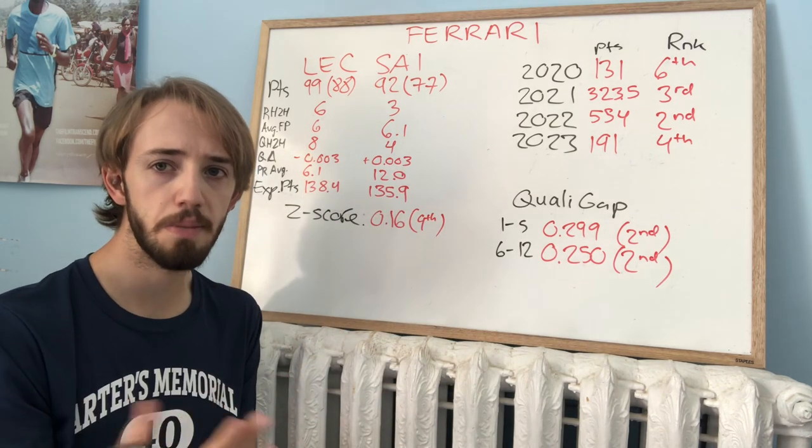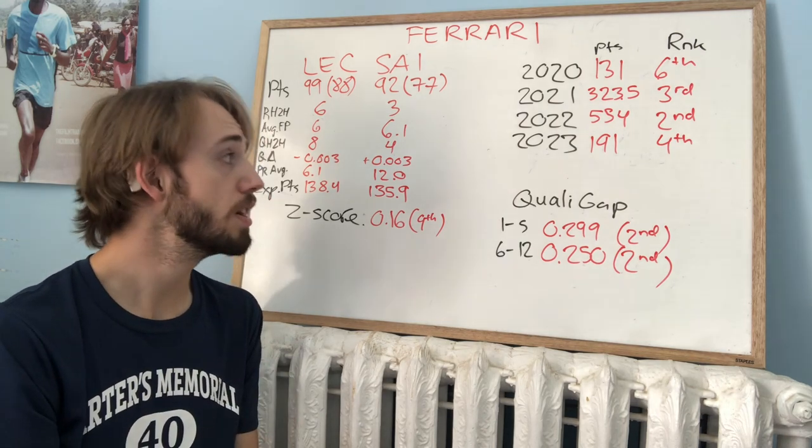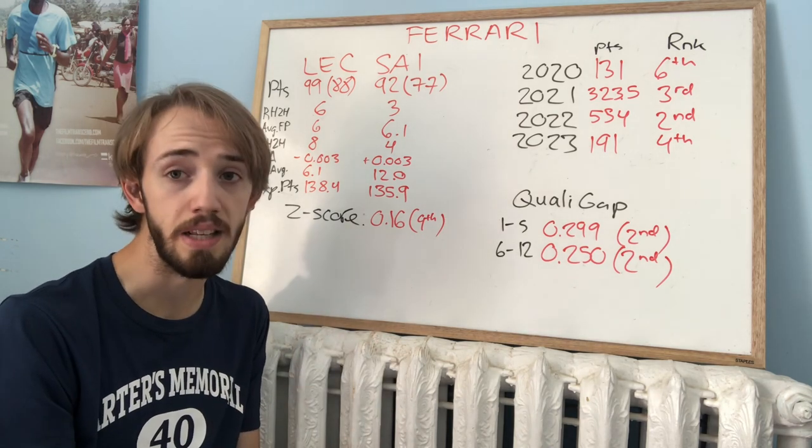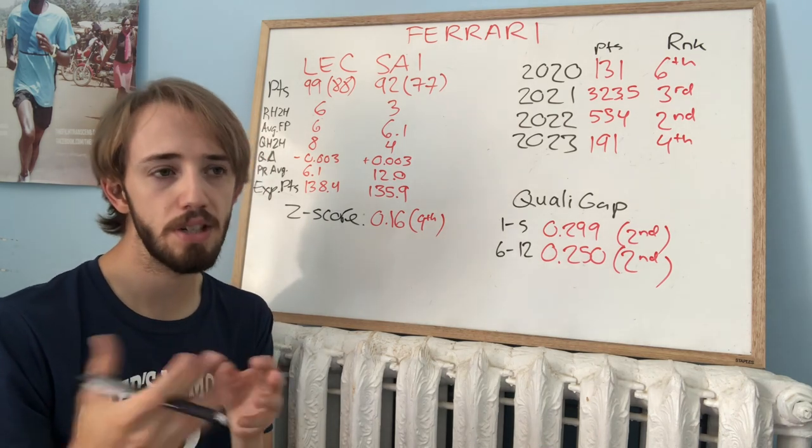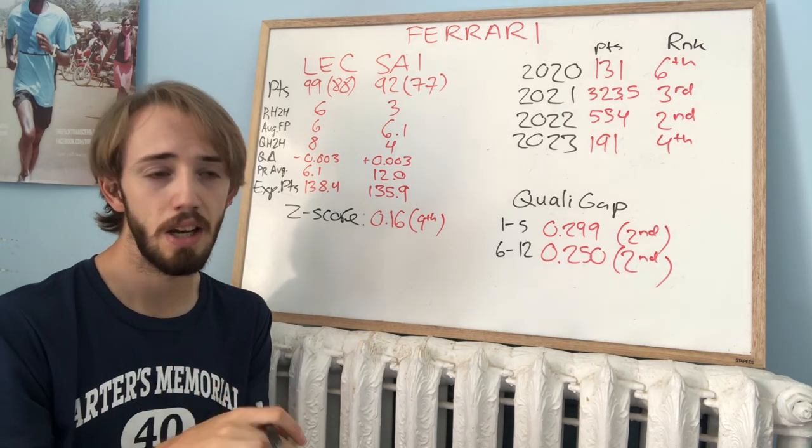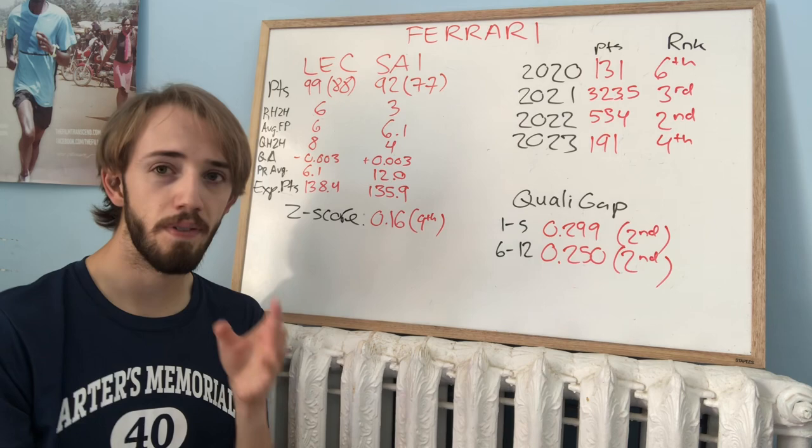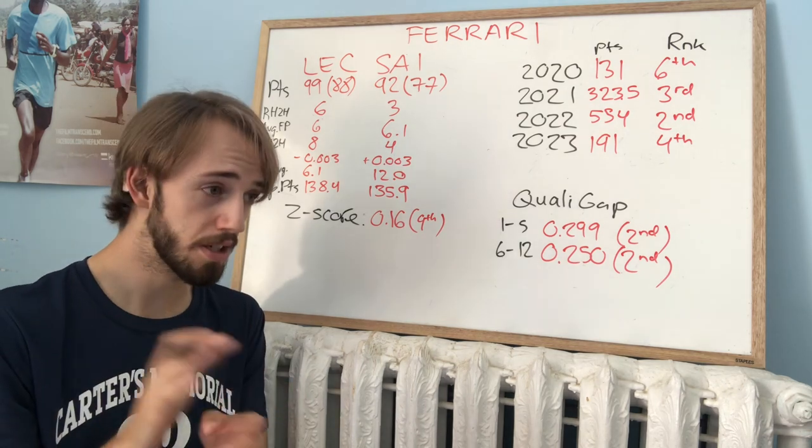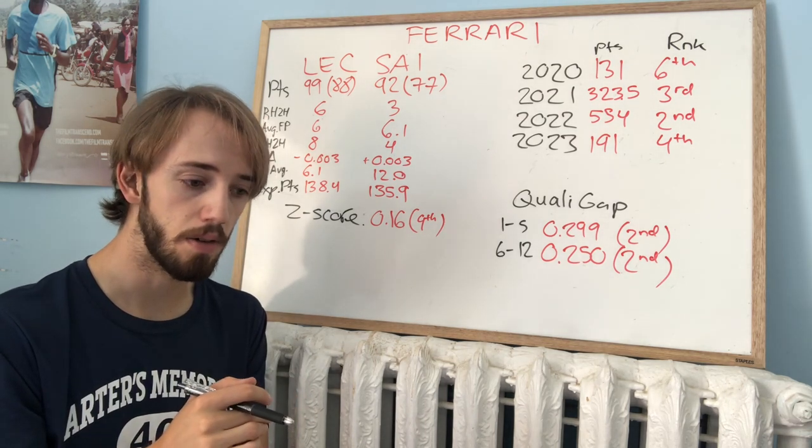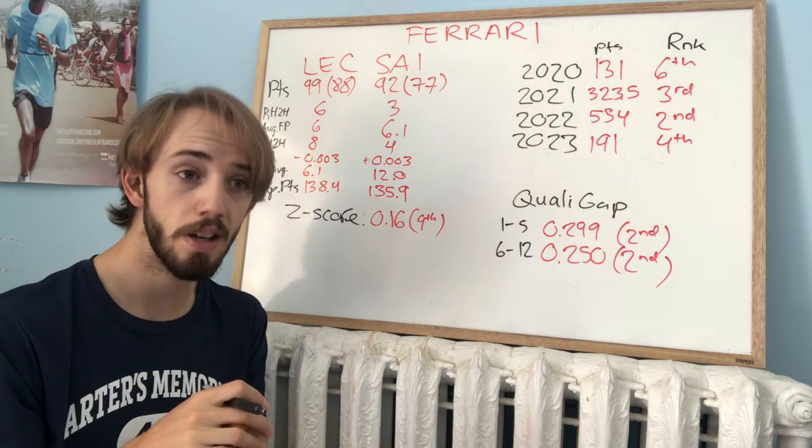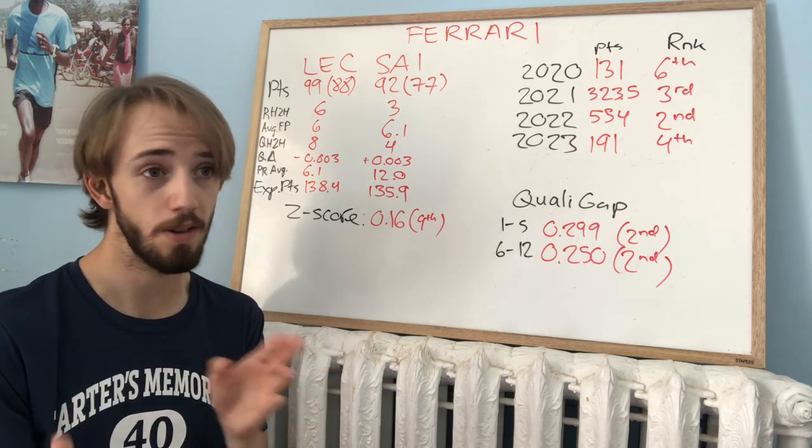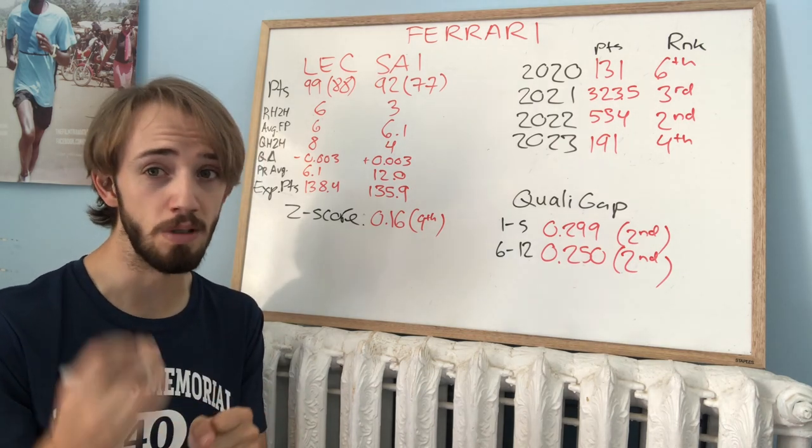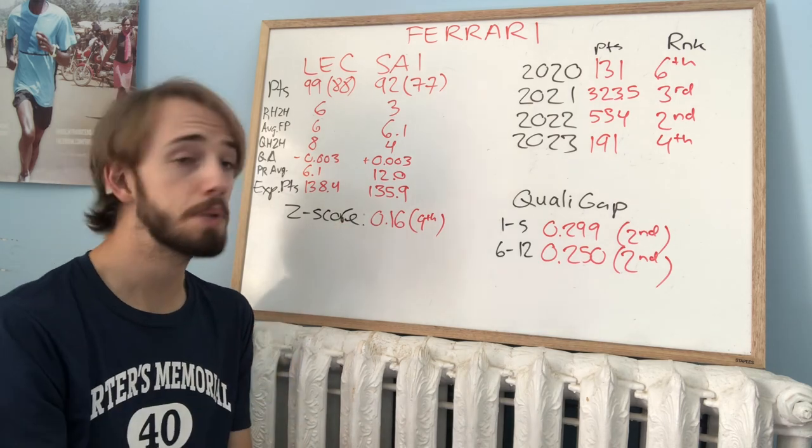And then 2023, I think they were really expected to build on that and really challenge for the title. But things really haven't gone that way. 191 points through the halfway mark of the season, which puts them fourth in the championship. I would say with about half a season left to go, I don't think they're really going to finish second. I think Mercedes probably have second place in the Constructors locked up. But that fight between third to fifth, I would say Aston, Ferrari, and McLaren is fairly fluid at this point. If they do really well after the summer break, I could see them finishing as high as third. If things really fall off and they have a lot of struggles, lots of errors on the driver and on the team side, I could see them potentially falling behind McLaren if McLaren have an absolutely fantastic second half of the year.